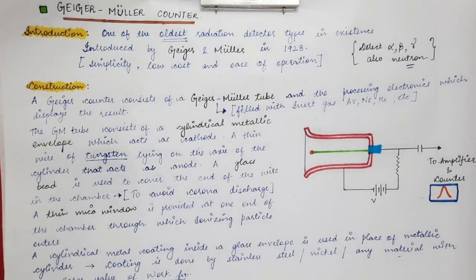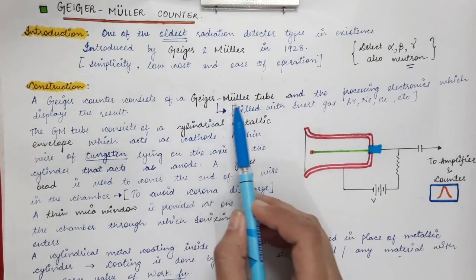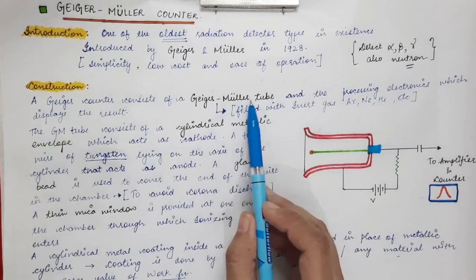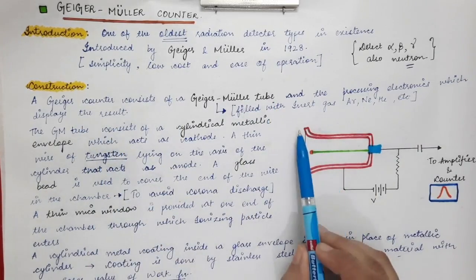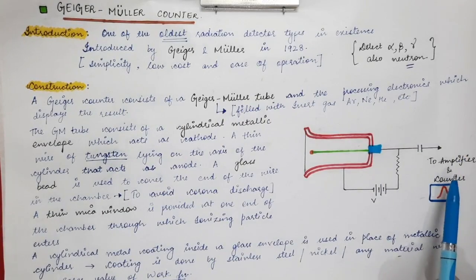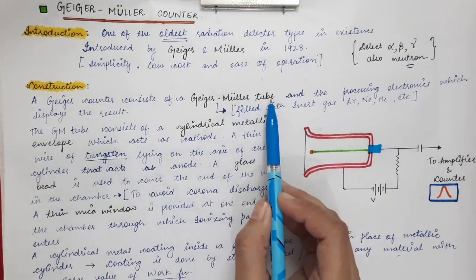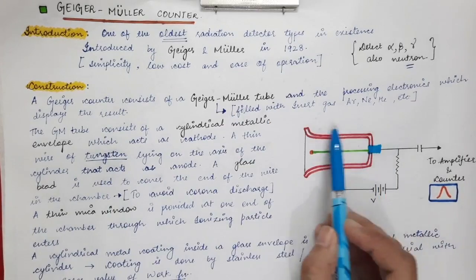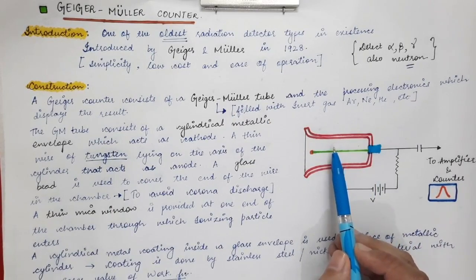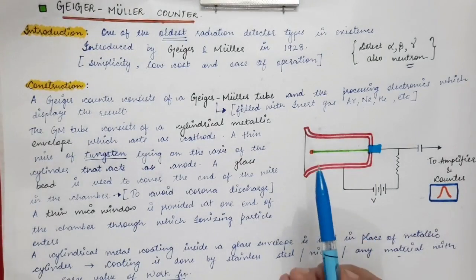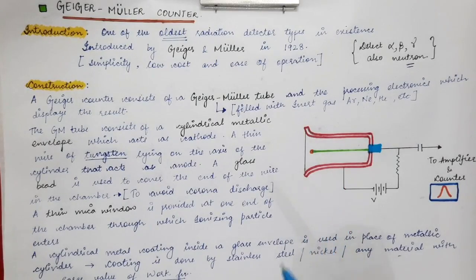The GM counter consists of a Geiger-Mueller tube, which is the very important part. Some electronics — amplifiers and counters — are attached to this GM tube which help display results. This GM tube is filled with an inert gas like argon, neon, or helium. In the next lecture we will discuss that in addition to this inert gas, there is also a quench gas.